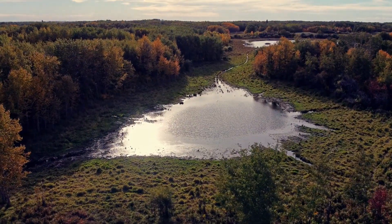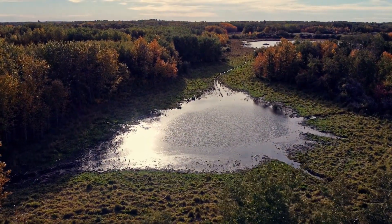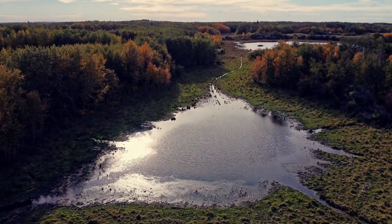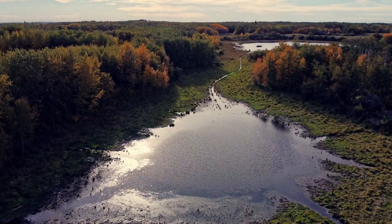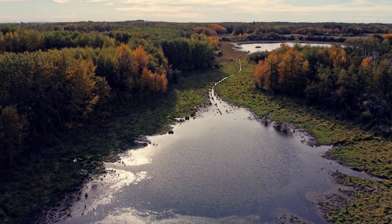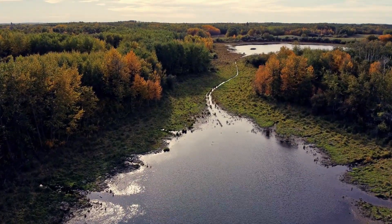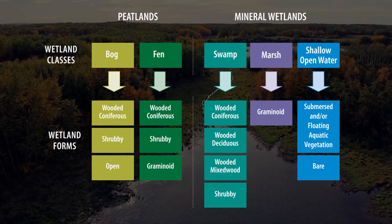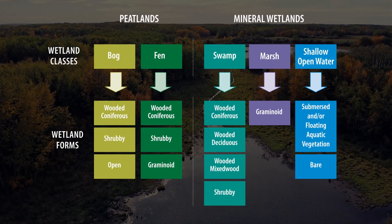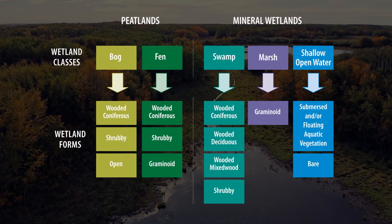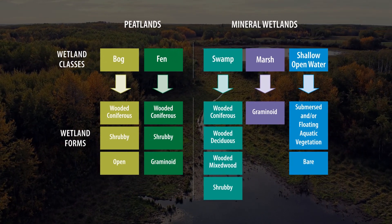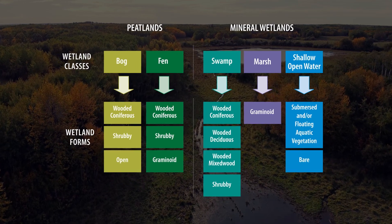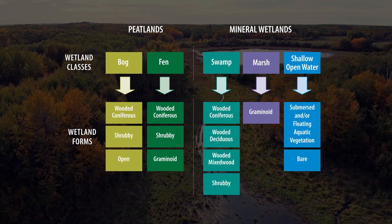Mineral wetland classes include swamps, marshes and shallow open water wetlands, also referred to as lowlands, ponds or sloughs. Wetland classes are further divided into forms using the prevalent vegetation community — tree, shrub, graminoid or aquatic plant cover.